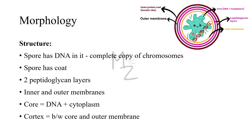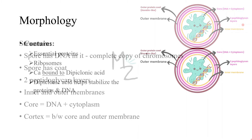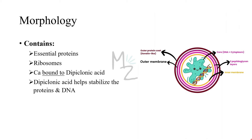Morphology: the spore has a DNA in it, which is a complete copy of the chromosome — not half and not less. The spore has an outer protein coat, keratin-like. It has two peptidoglycan layers, an inner membrane (the yellow one) and an outer membrane (the black one), and it has a core — the cytoplasm and DNA. The cortex is anything between the core and the outer membrane, including the two peptidoglycan layers. The spore contains the bare minimum of essential proteins and ribosomes. Calcium inside the spore is bound to dipicolinic acid. Calcium removes water from the spore, making it dehydrated and thus resistant. Dipicolinic acid helps stabilize the proteins and DNA.